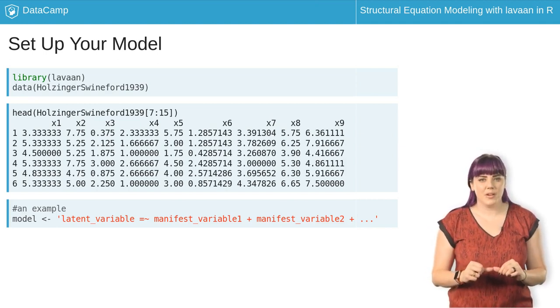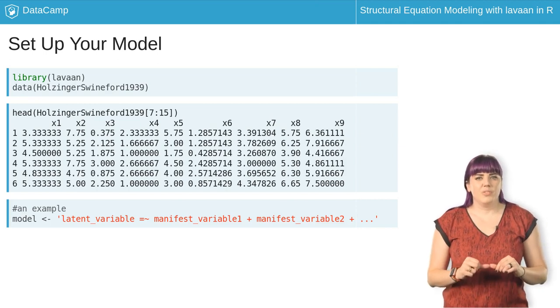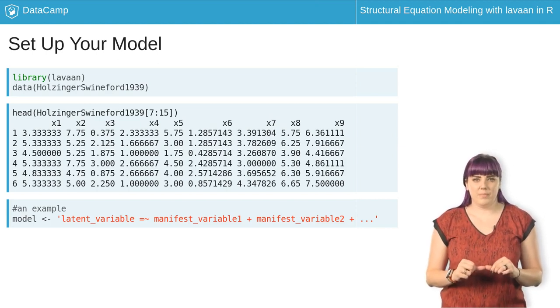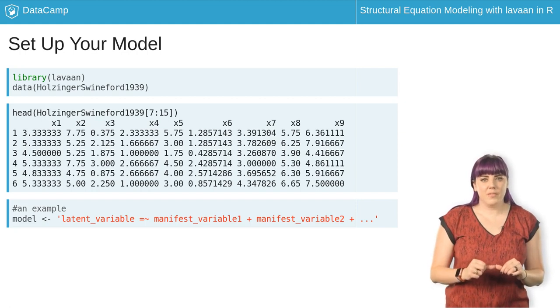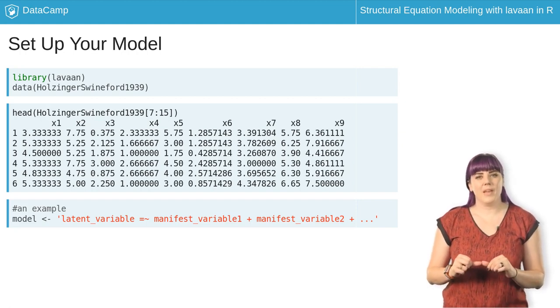An important symbol here is equals tilde, which indicates the direction of the prediction. This denotes that we expect the latent variable to predict the scores on the items.